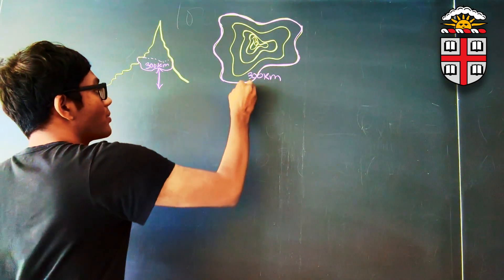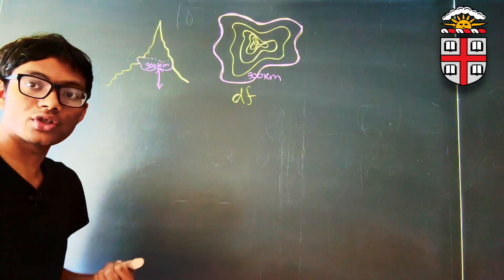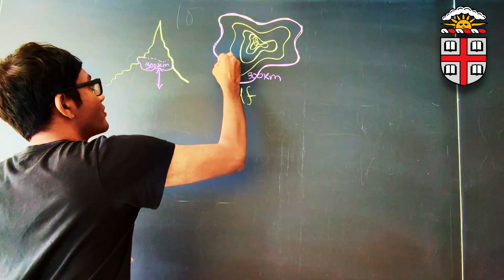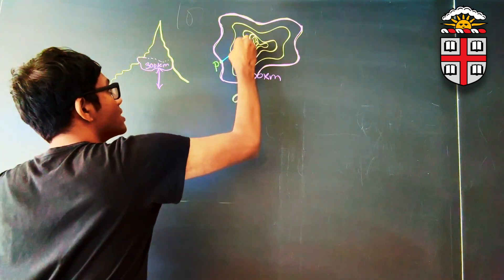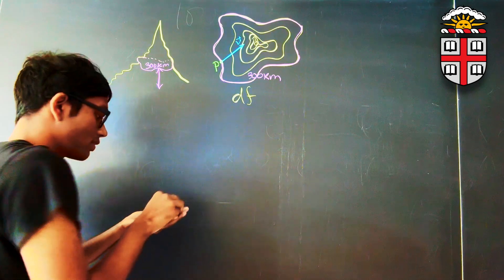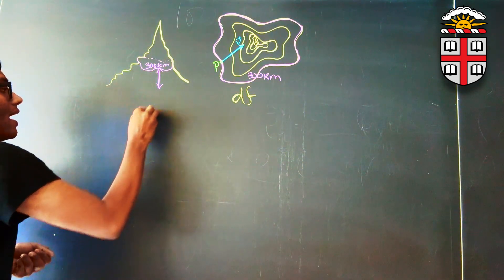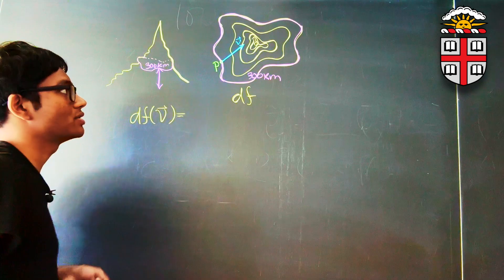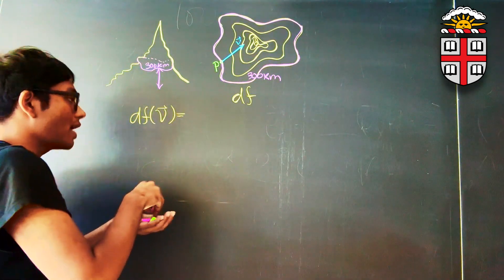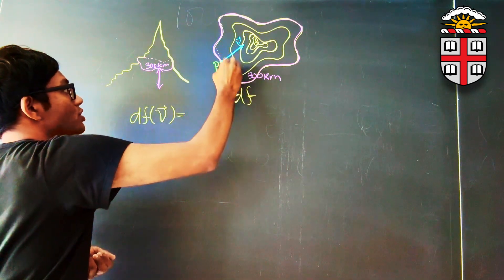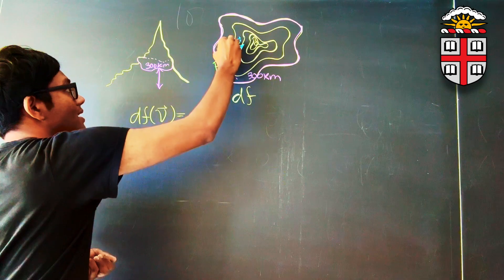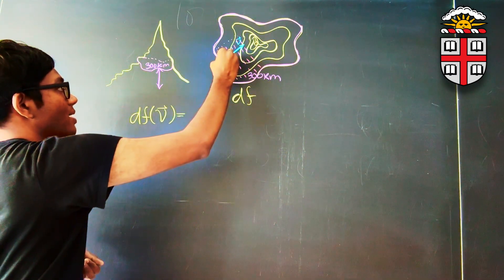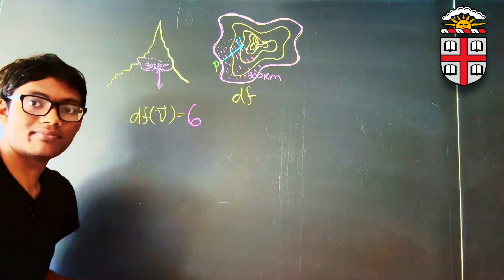These contour lines could represent the co-vector fields for some differential form DF. Consider some point P on this contour line with a vector V. We have to construct the tangent lines to the contour at point P and see how many of those tangent lines our vector V crosses. In this case, it might be 1, 2, 3, 4, 5, 6. So DF of V might be 6.